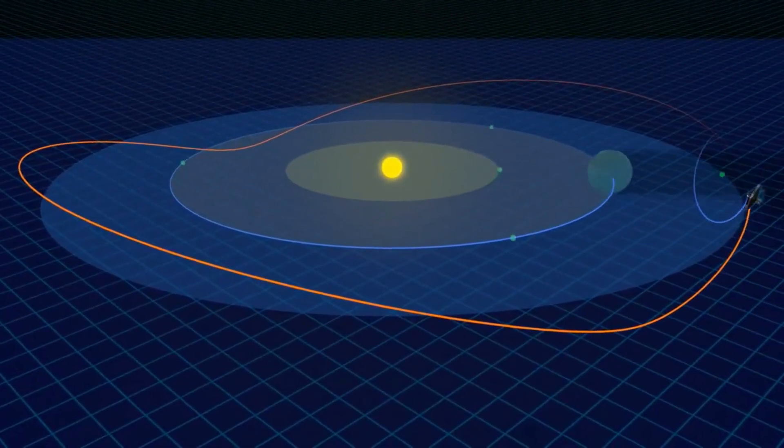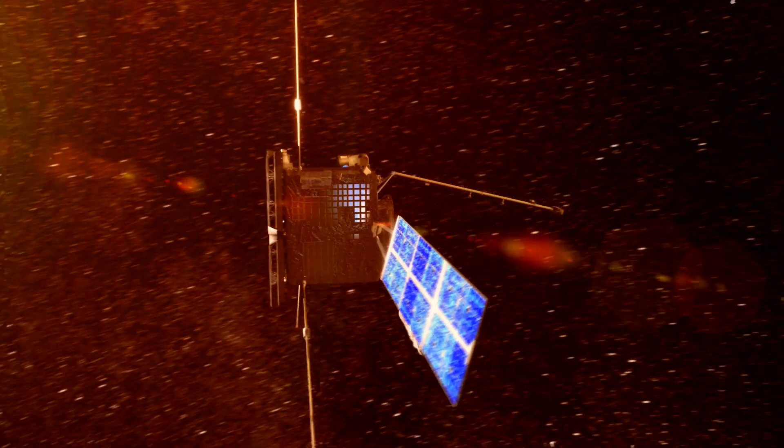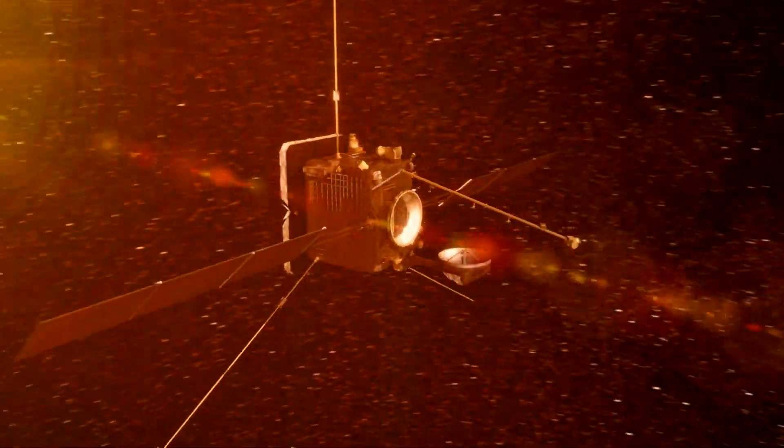The satellite will ultimately be stationed in a halo orbit around L1. From this vantage point, Aditya L1 will observe the Sun for the next five years.